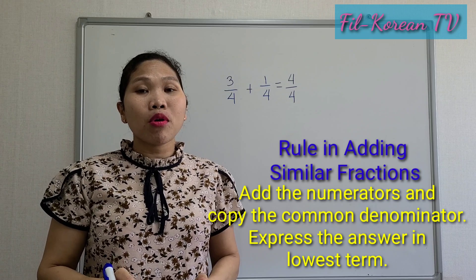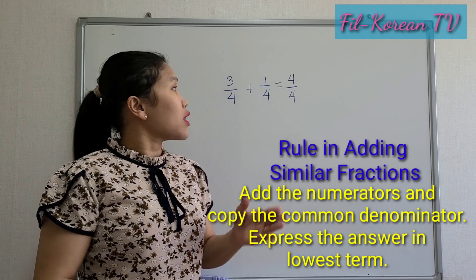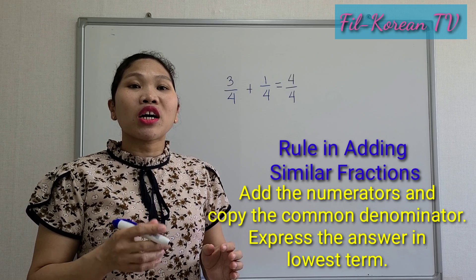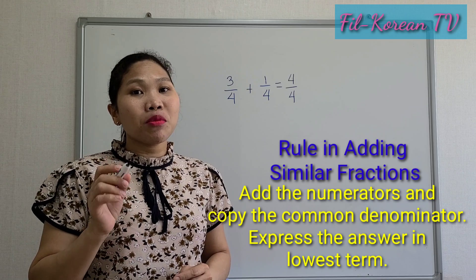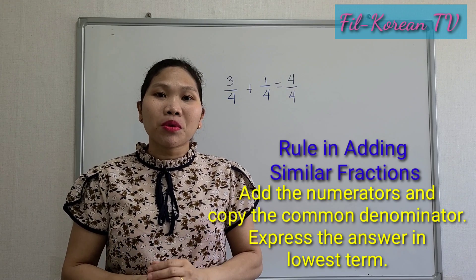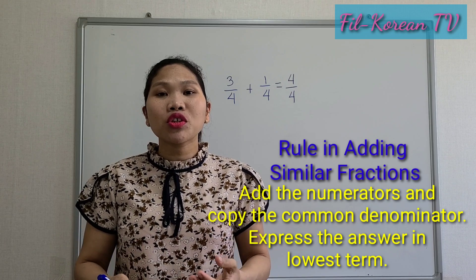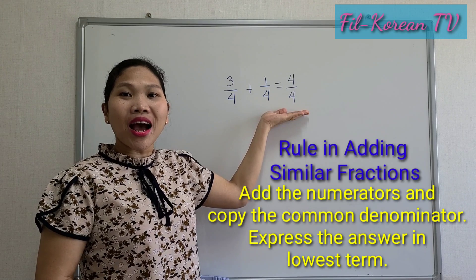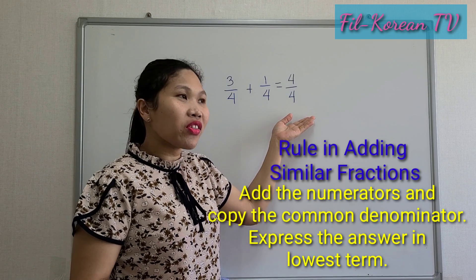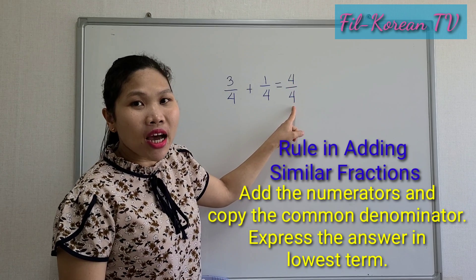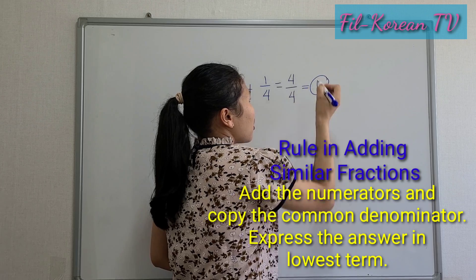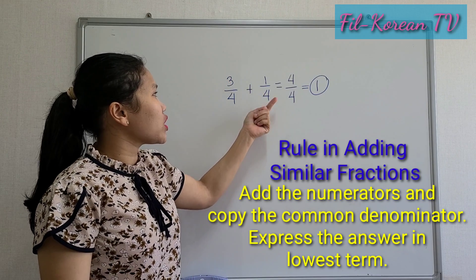Four-fourths is an example of an improper fraction. You need to express the answer in lowest term always — reduce or simplify the answer. We will divide the numerator by the denominator: four-fourths divided by four equals one. Therefore, three-fourths plus one-fourth equals one.